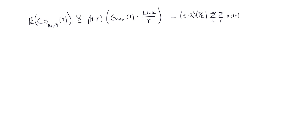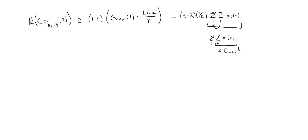This inequality holds for any j, so we can make j be the best action. Now we reason about the double sum term: if we switch the t and i sums, we get the sum over i of the sum over t of x_i of t. For any fixed i, that inner sum is at most g_max of T, because we're picking some action that is at most the best action. So the sum over i of g_max is just k times g_max of T, and this k cancels with the k in the denominator.